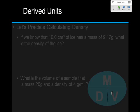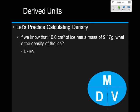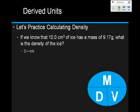All right, here's our circle. The first problem asks us to find density, so our formula is D equals M over V. Let's fill in the formula: D equals 9.17 grams divided by 10 centimeters cubed. Once you divide them, the density equals 0.917 grams per centimeters cubed. If you didn't get that right, make sure you put a question mark next to it so you know to ask in class.